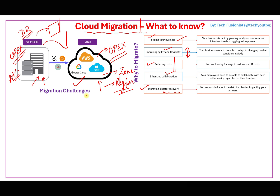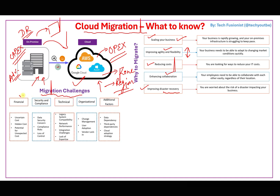Despite these benefits, organizations are still reluctant to move to the cloud. Challenges include finance — uncertainty about costs — and concerns around security and compliance, since moving to the cloud means losing some control. However, cloud providers have strong security teams. If you're still unsure, you can go with a hybrid model: keep your data on-premises and migrate only applications and services to the cloud.